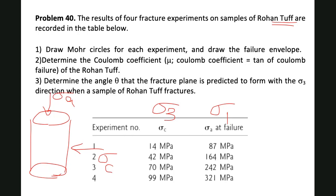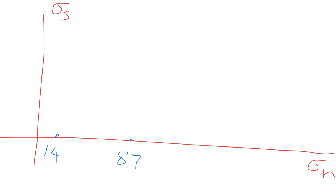Let me go to the blackboard. I would have my sigma_s here and sigma_n here. The first experiment, the sigma_3 was 14, let's say this is 14.